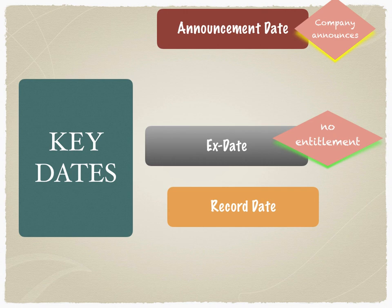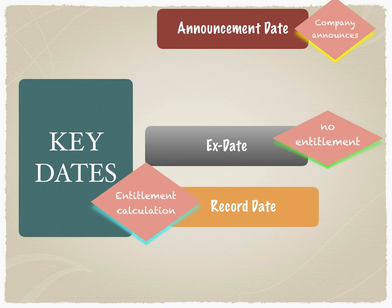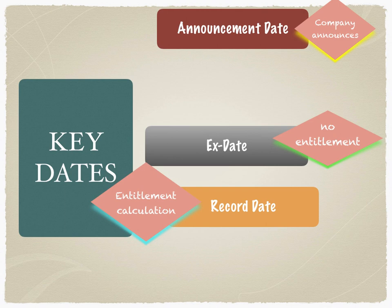Then comes the record date. The record date is the date on which the transfer agent has to calculate who the investors of the company are and therefore calculate the entitlement per investor. This is the job of the registrar or transfer agent. The record date is mentioned as part of the corporate action announcement. If the investor is holding shares on the record date, they will receive the entitlement — they must own the share on the record date.